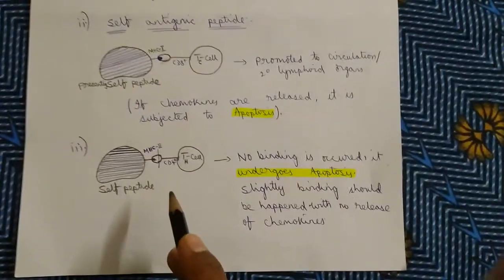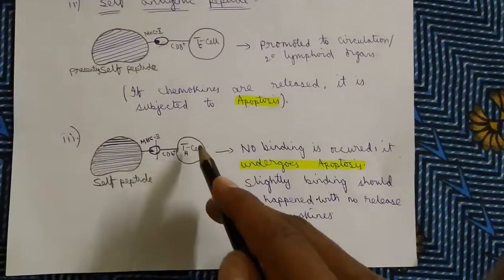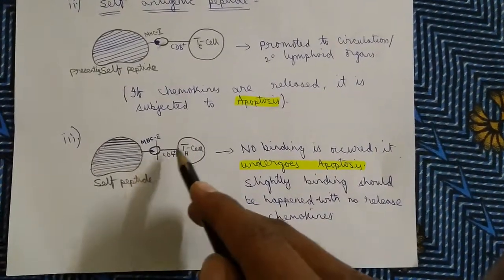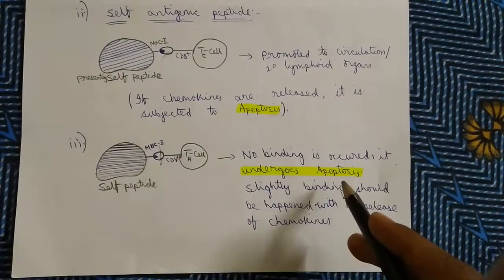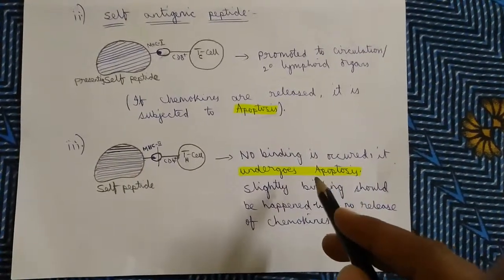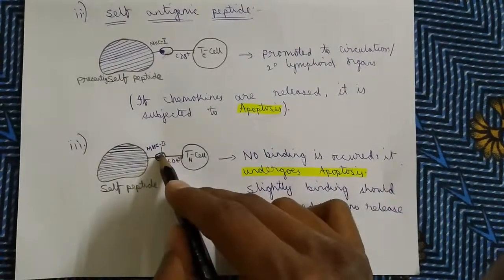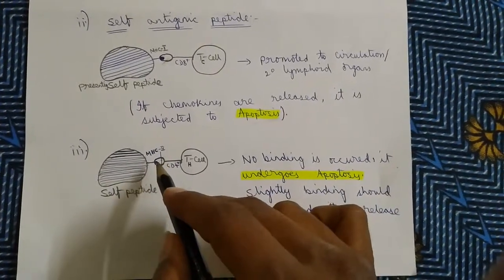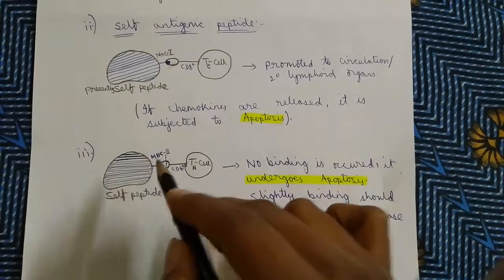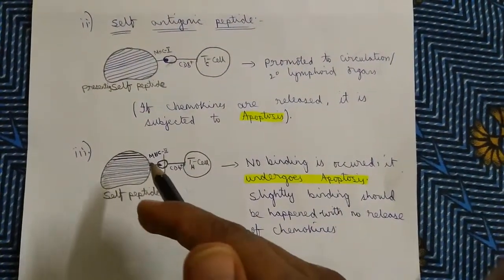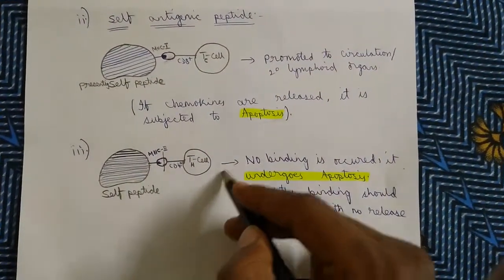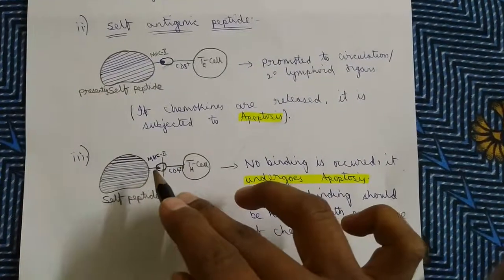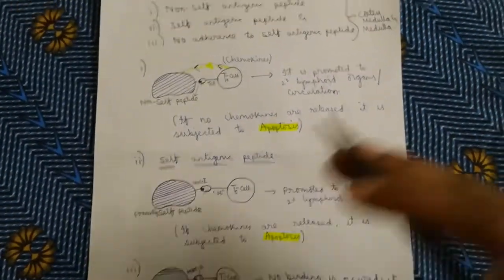The last test for the T-cell is non-adherence to self-antigenic peptide. If the T-cell doesn't recognize the peptide and doesn't release CD4 to bind to it, then it will also undergo apoptosis. The key point to remember is that whether it is self-peptide or non-self-peptide, the T-cell must come and release the CD4 receptor to bind to the particular MHC molecule. Only then will that T-cell be promoted to the secondary lymphoid organ.